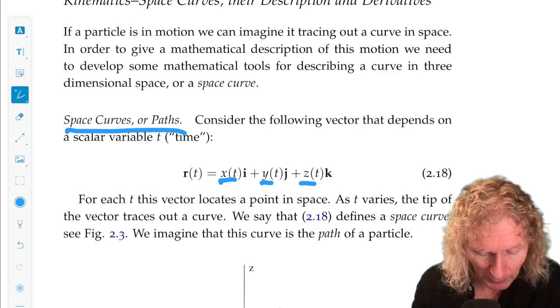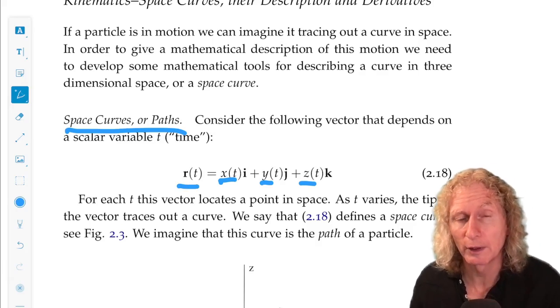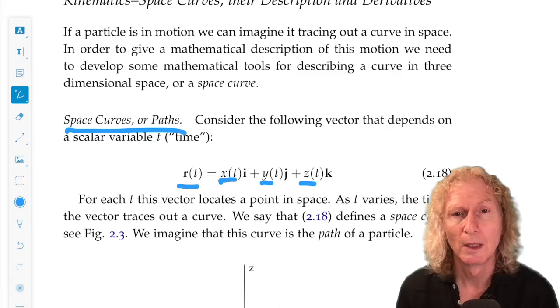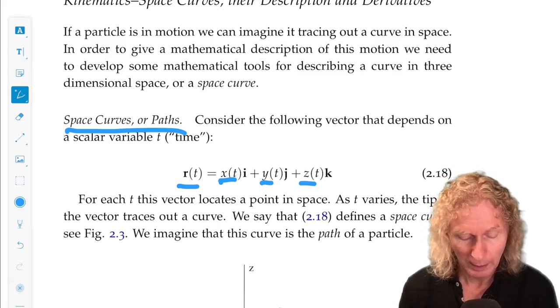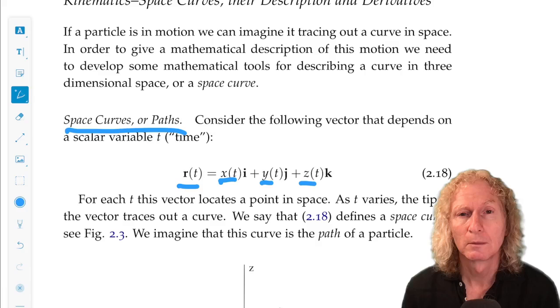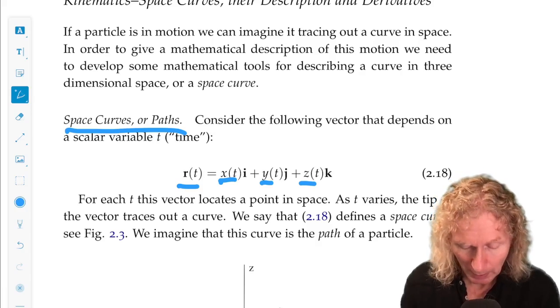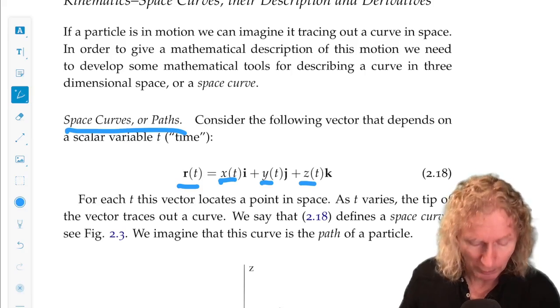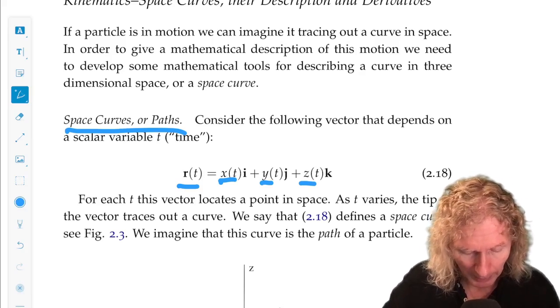So we can represent it as a vector in this way. R of t, vector R of t, is equal to x of t i plus y of t j plus z of t k. That is a space curve, or sometimes we call it a path.